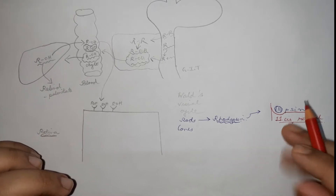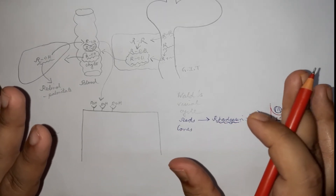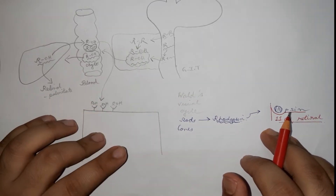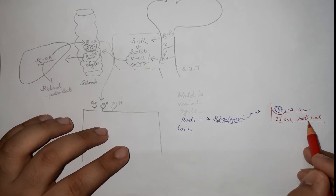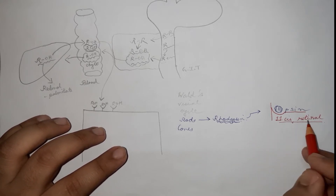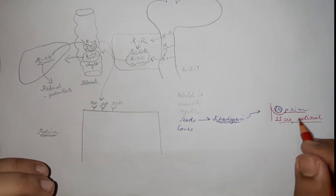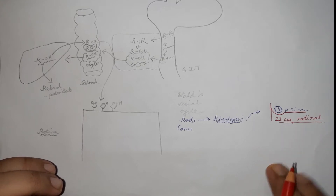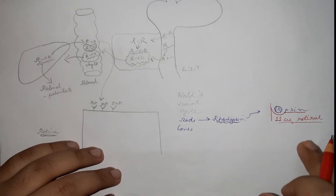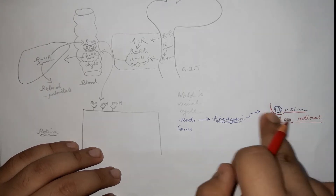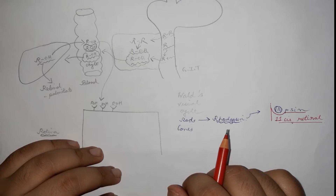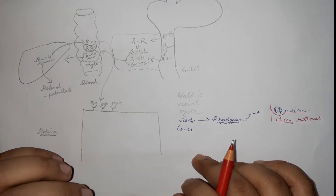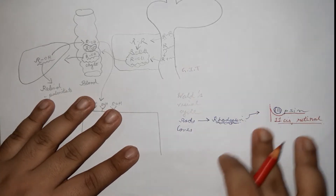Now you can understand why vitamin A is required for vision. 11-cis retinal is a vitamer — one of the retinoids. If you don't have this compound, or the parent compound vitamin A from which 11-cis retinal is derived, you wouldn't have rhodopsin and would have problems with your vision.